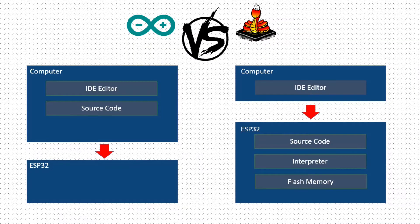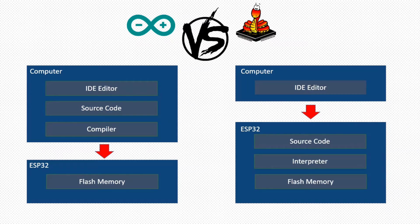While in Arduino, the source code compilation happens in the computer. The compiler converts code into machine code. The machine code is transferred to the microcontroller through a serial interface and written to flash memory. The flash memory is overwritten every time the source code is uploaded.